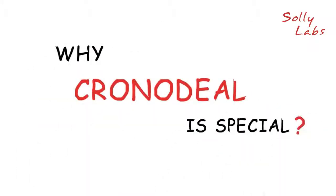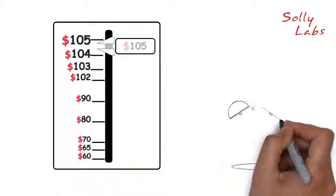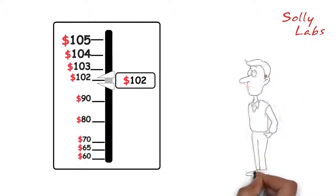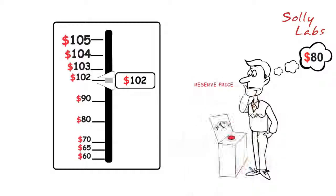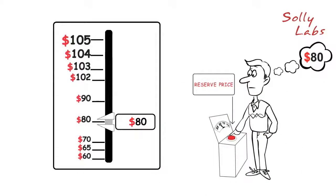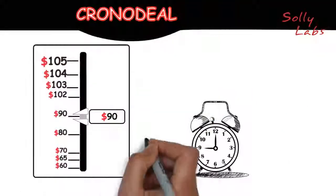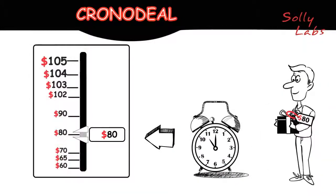Why ChronoDeal is special? The deal's price falls as time passes. Each user can book its own price with a convenient selection system. Then, if the price of the product reaches the price you reserved, you buy the item.